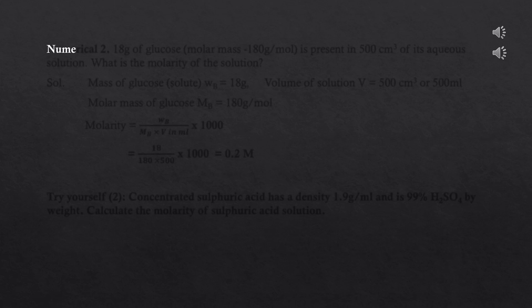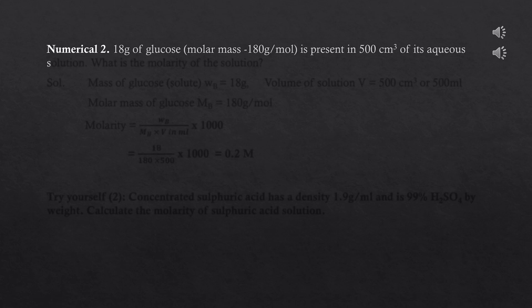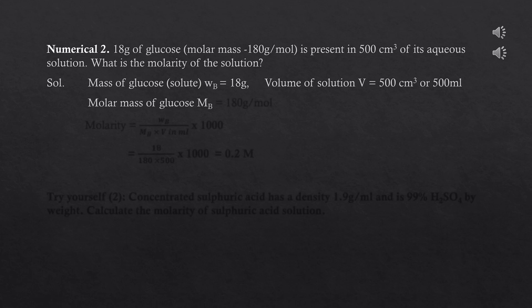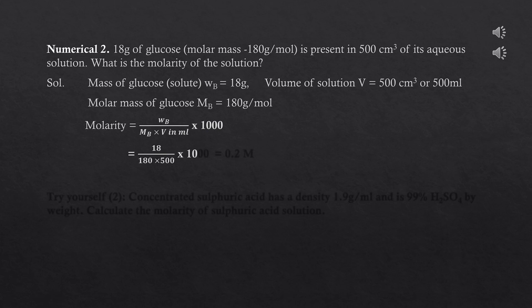Let's try a numerical of molarity. 18 grams of glucose (molecular mass 180 g/mol) is present in 500 cm³ of its aqueous solution — what is the molarity? W_B = 18 g, V = 500 ml, M_B = 180 g/mol. Applying M = (W_B / M_B) × (1000 / V) = (18 / 180) × (1000 / 500) = 0.2 M. Note: if volume is given in litres, do not multiply by 1000.